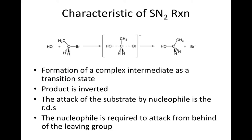In the SN2 reaction, the rate-determining step is when the nucleophile attacks the substrate from the backside of the leaving group. Instead of a carbocation intermediate as in the SN1 reaction, this reaction proceeds through a transition state. Since the nucleophile attacks from the backside, the stereochemistry of the product is inverted from the initial substrate.